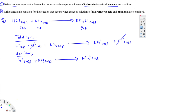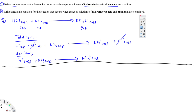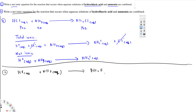Let's do the second one. The second question is asking: when hydrofluoric acid and ammonia are combined, what is the net ionic equation? So we have HF aqueous plus NH3 aqueous combined.